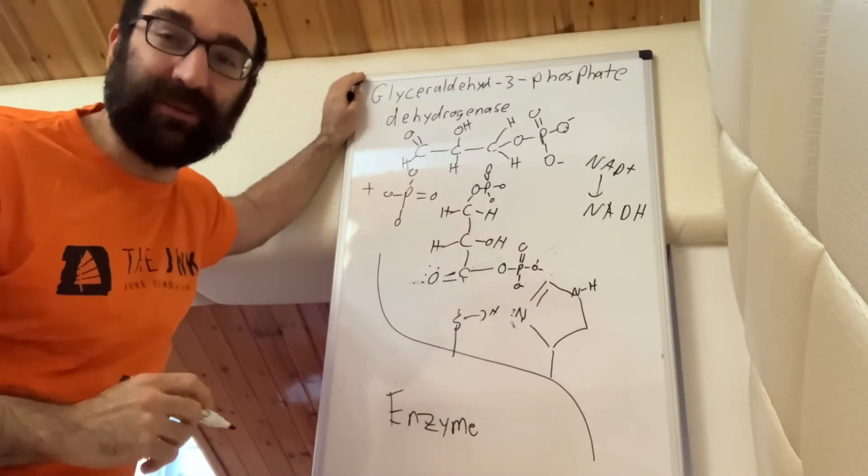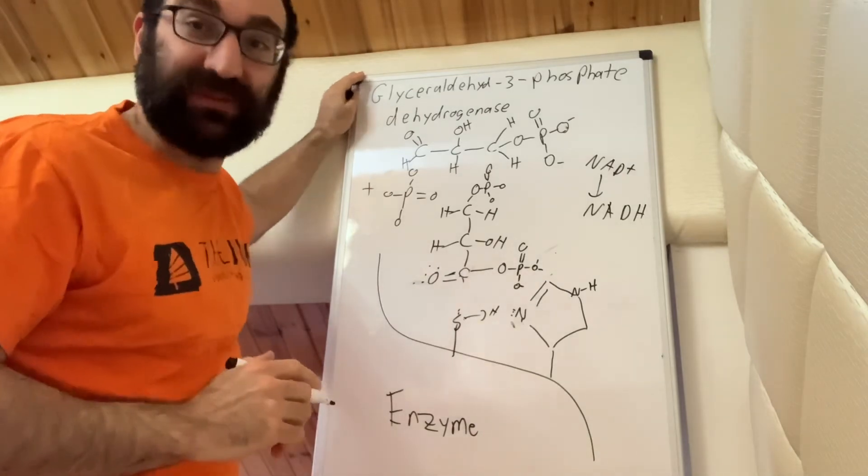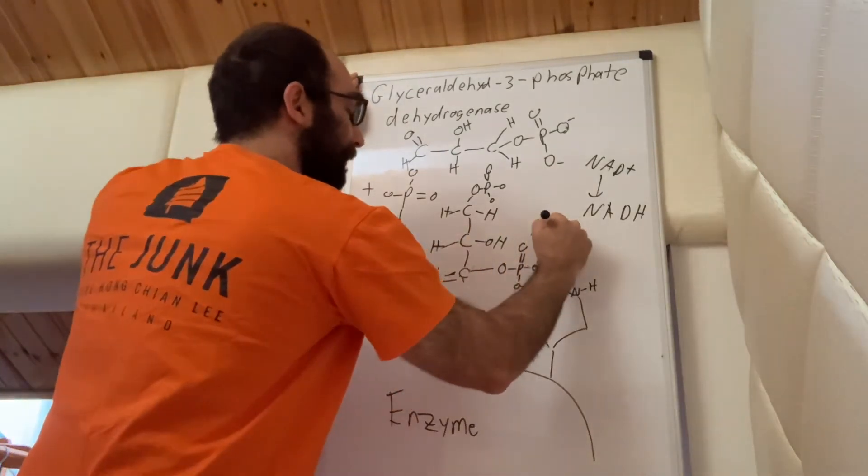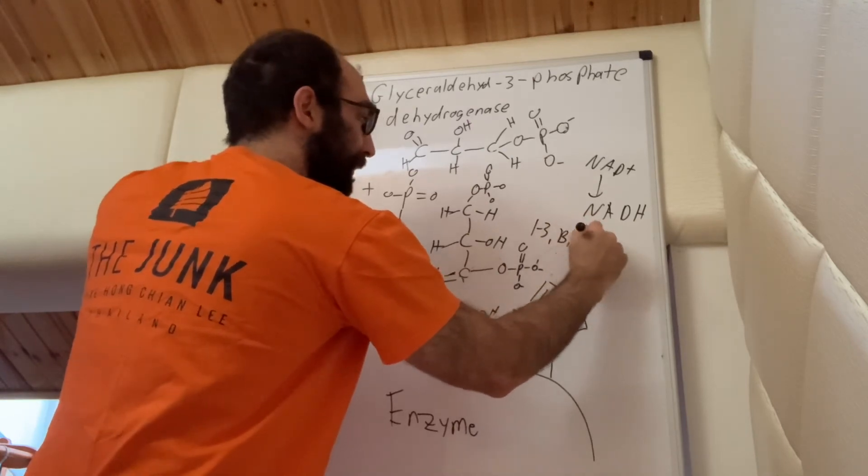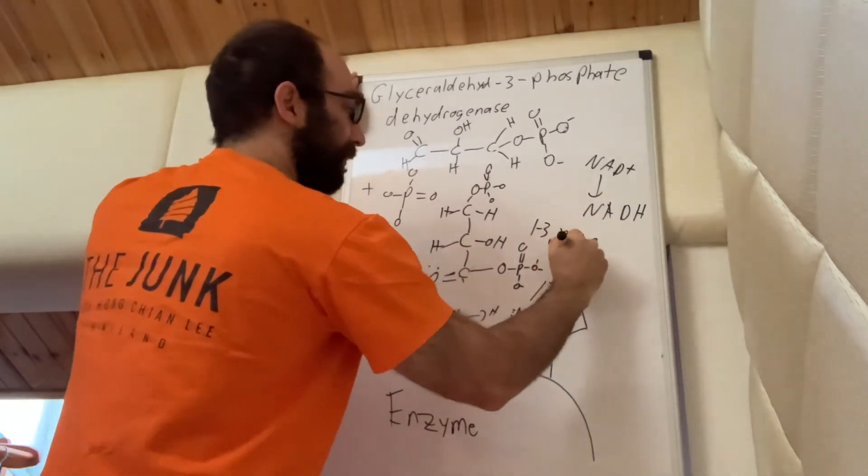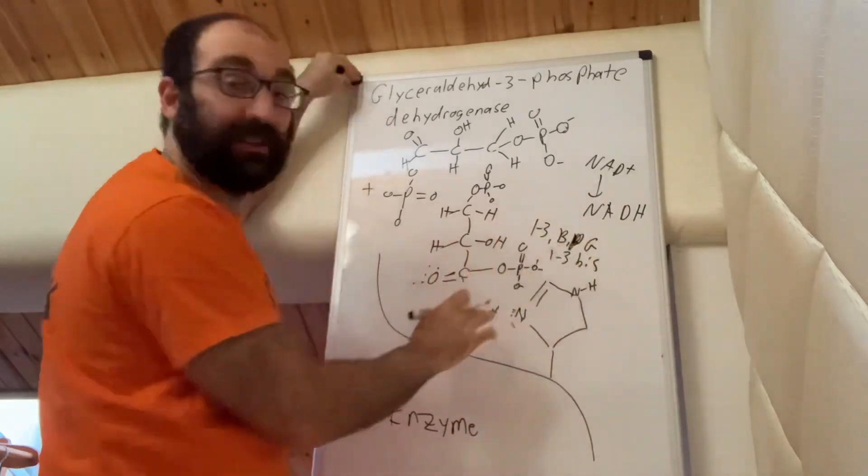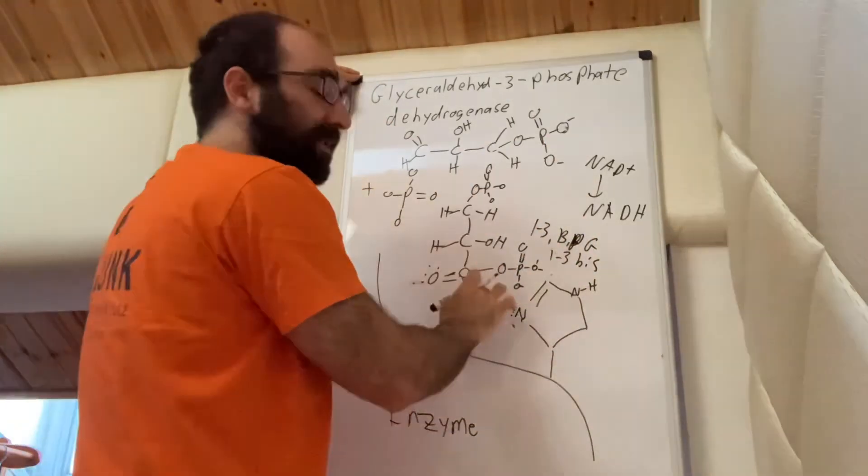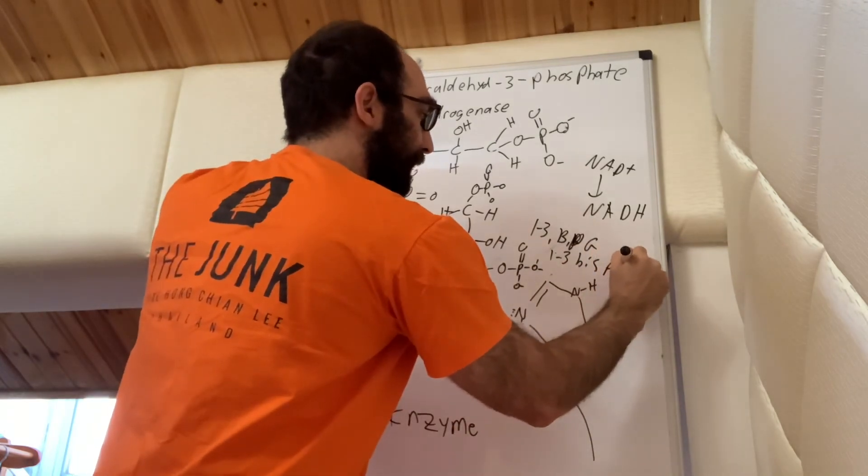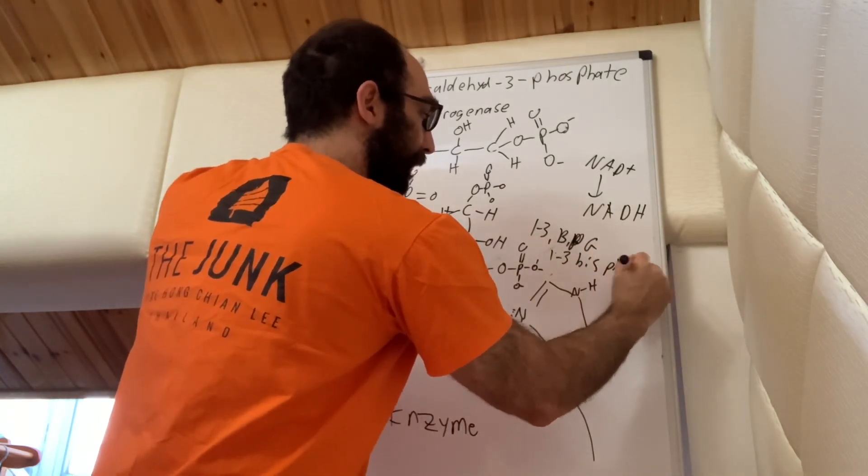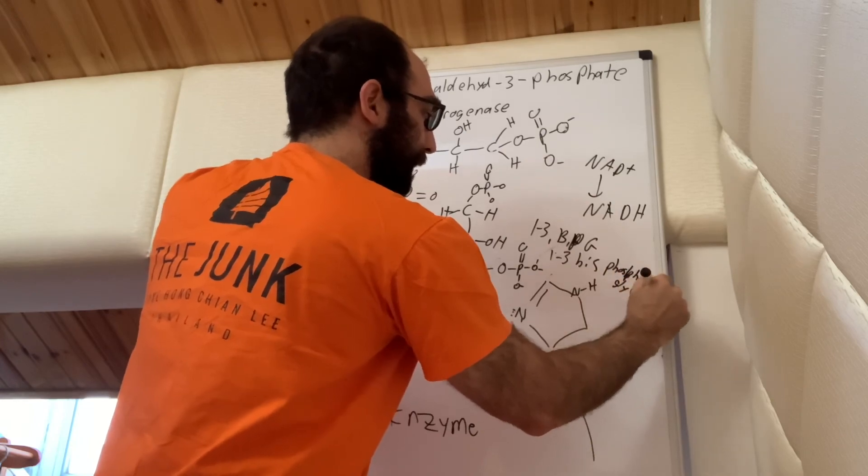And then this carbon has now formed 1,3-BPG, the 1,3-bisphosphoglycerate. So this molecule here is called 1,3-BPG, otherwise known as 1,3-bis, because it's got two phospho groups that aren't next to each other. If it's biphospho, they're next to each other. Bisphosphoglycerate.